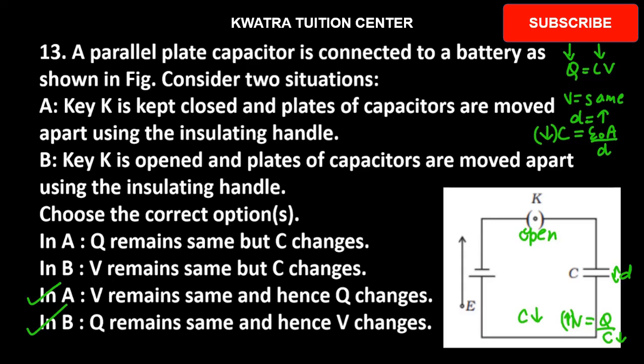That if one thing is increasing, what will happen to the other thing? According to that you have to see the options. Because I saw that here first they are talking about Q and here they are talking about V. So V cannot remain same in this case.